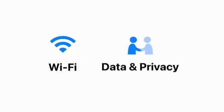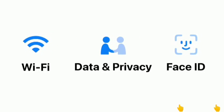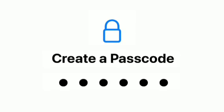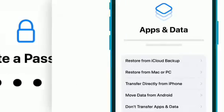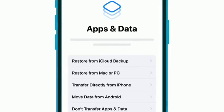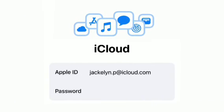Connect to Wi-Fi and activate your iPhone. You can also learn more about how your data is managed and set up Face ID on the next few screens. Next, create a passcode for your device. On the Apps and Data screen, choose Restore from iCloud Backup. Enter your Apple ID and password.